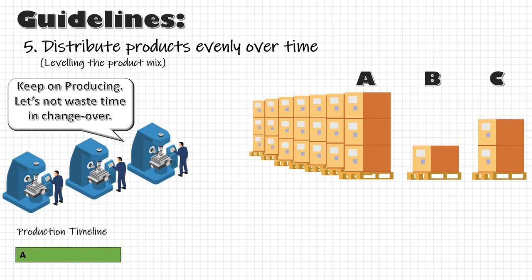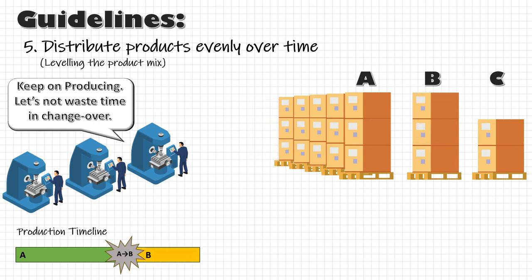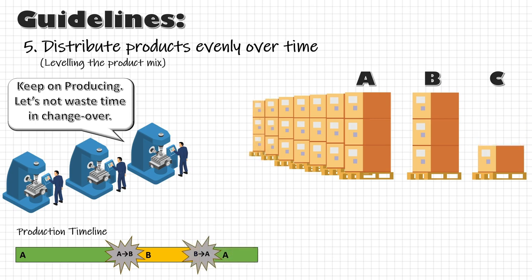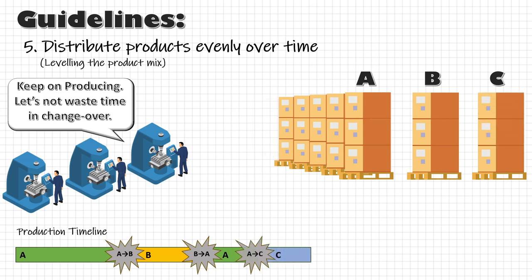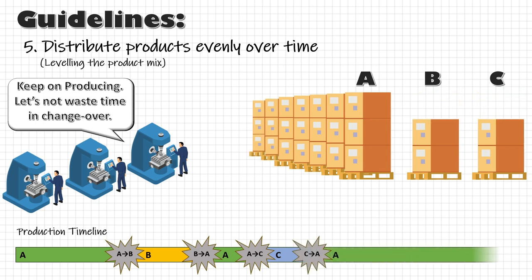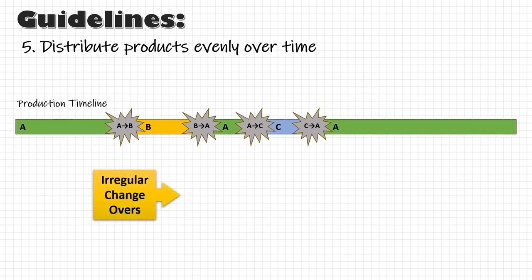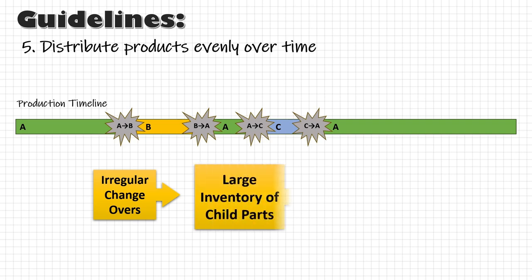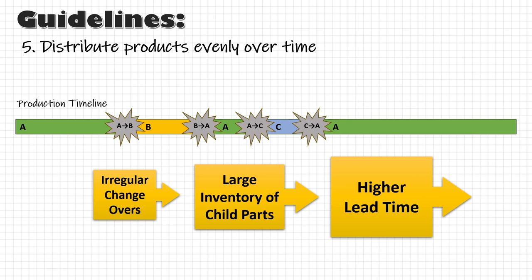So let's say I'm producing A, then I find out B is almost finished, take a changeover, start producing B. As soon as B is replenished, I change over to A again. Soon C needs replenishment, so I change over, fill the stock for C, and change back to A — perhaps continuing for 3-4 days until B and C stocks run low. The obvious disadvantage is unpredictable changeovers, but the bigger problem is that because of these irregular changeovers, we cannot predict which product runs next or for how long — requiring larger inventory of all child parts in upstream processes, which leads to higher lead times.